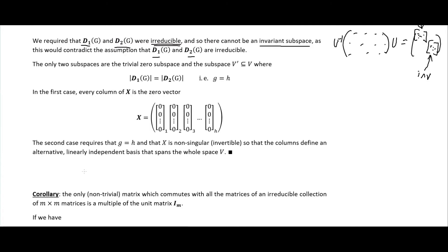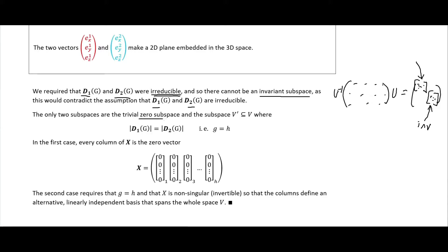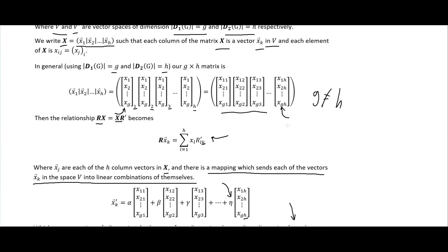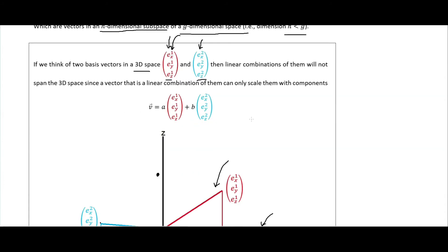So the only two subspaces that work are the trivial zero subspace and the full space where G equals H. In the first case, every column in X is just the zero vector. In the second case, G must equal H, X must be non-singular (invertible), and the columns of X define a linearly independent basis spanning the whole space V. That's why we can't have H smaller than G: there must be at least as many columns as rows and vice versa. Therefore, only a square matrix satisfies this relationship.